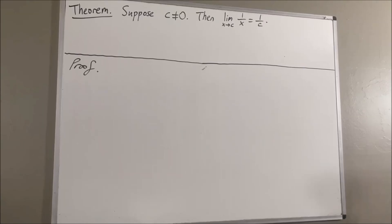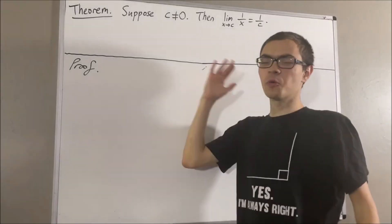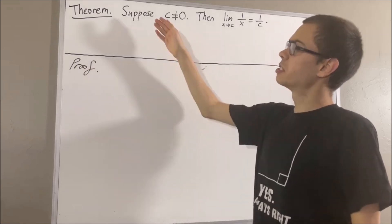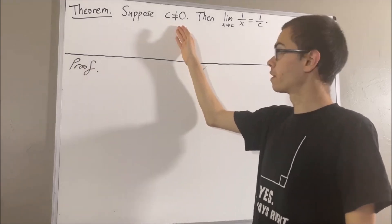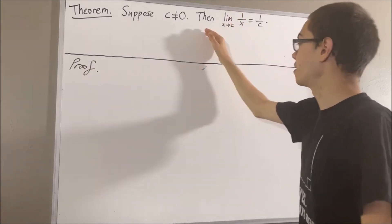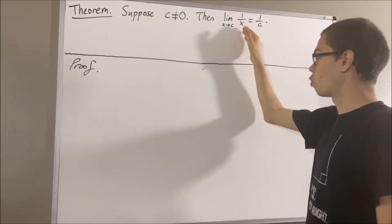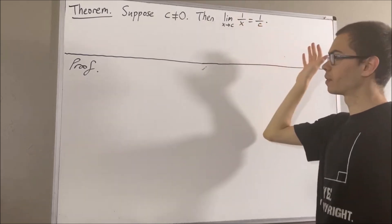Hello! In this video, we are going to prove the following theorem. Suppose c is non-zero. Then, the limit as x approaches c of 1 over x is equal to 1 over c.